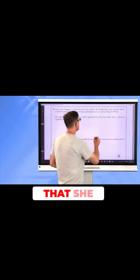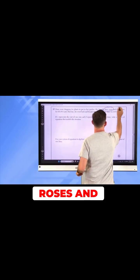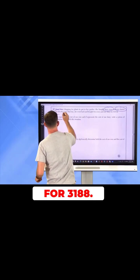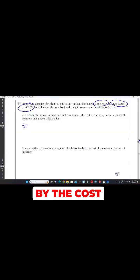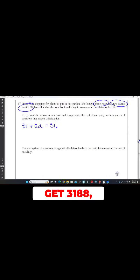Now, what do we know? We know that she bought three roses and two daisies for $31.88. So if I take three and I multiply it by the cost of one rose, and I take two and I multiply it by the cost of one daisy and I add those together, I have to get $31.88, right?